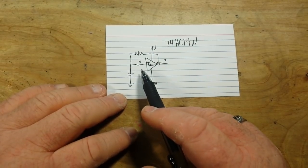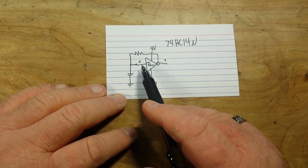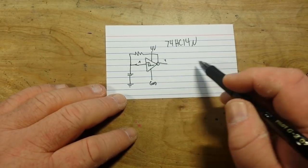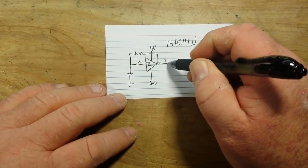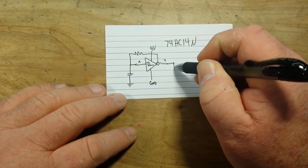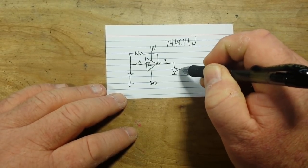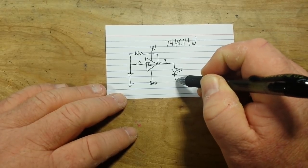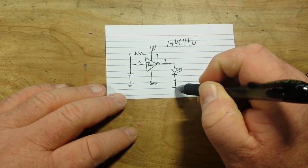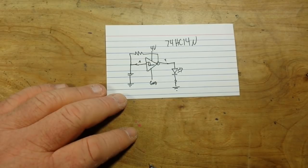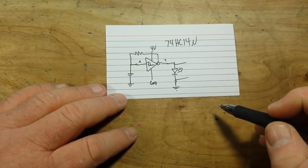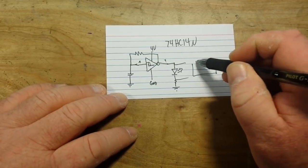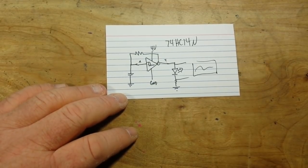So we are completely unable to tell what the opening state of this will be. It could be high, it could be low. Whatever it is, we'll get the opposite here. And what we can do is we can just take that, run it to an LED through another resistor to ground. And we can also probe it here with our oscilloscope. So let's do that.